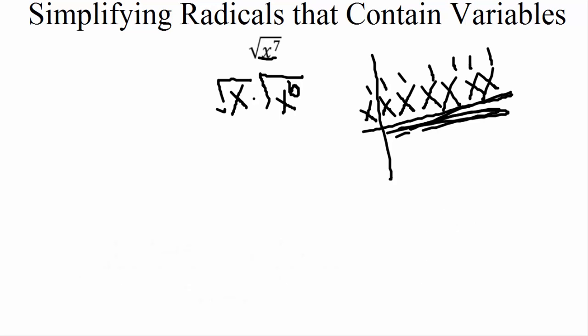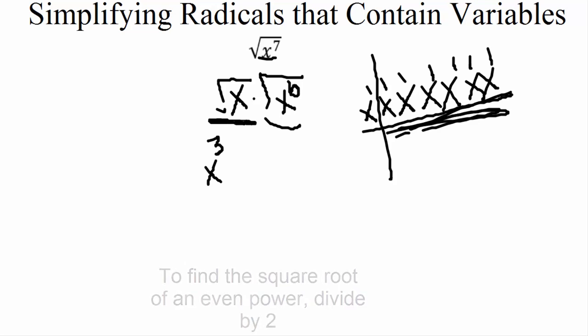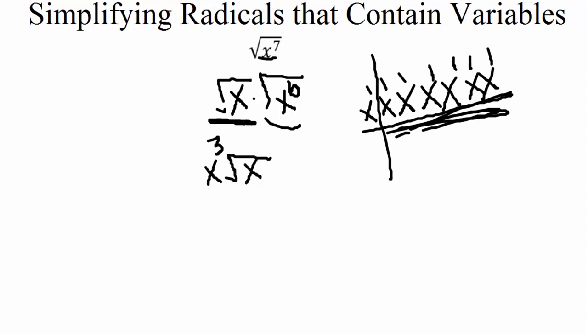After factoring, we take the square root of what we can. We can simplify the x to the sixth because it's an even power — divide by 2: 6 divided by 2 is 3, giving us x to the third. The remaining x has a power of one; we can't chop that in half, so we just drop it down as the square root of x. Our final answer is x cubed times the square root of x.